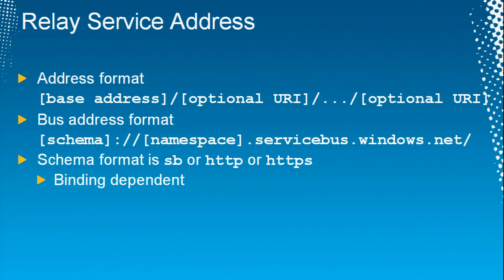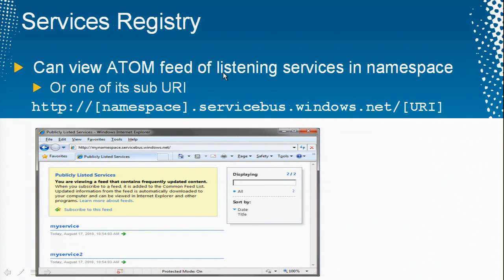To talk to a service behind a service bus, you need a base address which includes the address of the service bus plus one of your accounts — typically called a namespace — then a number of optional URIs. Once your service is running in a service bus, there can be an Atom feed showing you the list of running services. Atom is a bit of a flaky mechanism — it's not real-time and not very reliable. I suspect the only reason they use Atom is because this technology was mostly developed by Clemens Vasters, who is an avid blogger and knew how to use Atom.